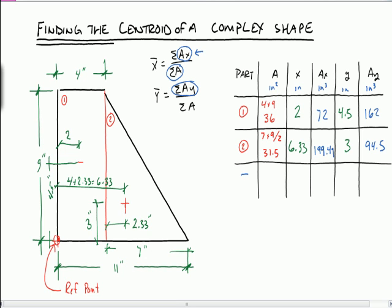And now what I need to do is sum them up. So, the sum of the areas is 36 plus 31.5 and that will give us 67.5 inches squared. And the sum of my Ax's is 72 plus 199.49 or 271.49. And my sum of my Ay's is 256.5.